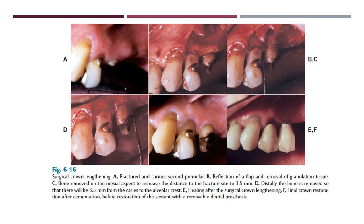Here you can see the crown lengthening procedure: a fractured and carious second premolar is seen, a flap is reflected, granulation tissue is removed, bone is removed from the mesial and distal aspects so that we have an alveolar crest on both sides. After healing, the final crown restoration is cemented in place — once we get sufficient crown height, we can restore it.